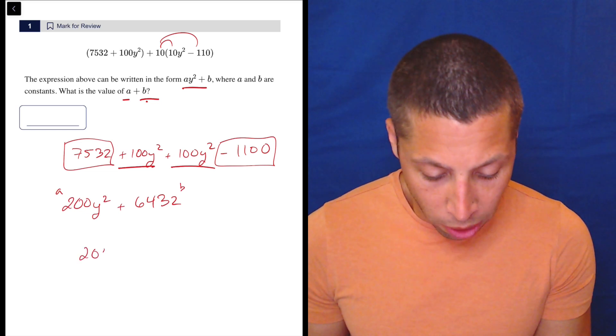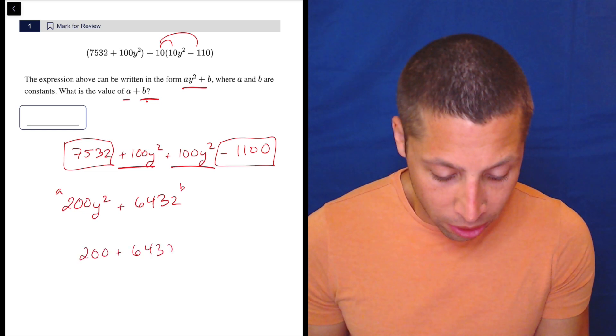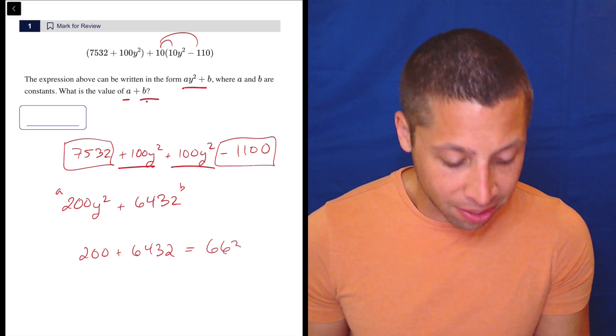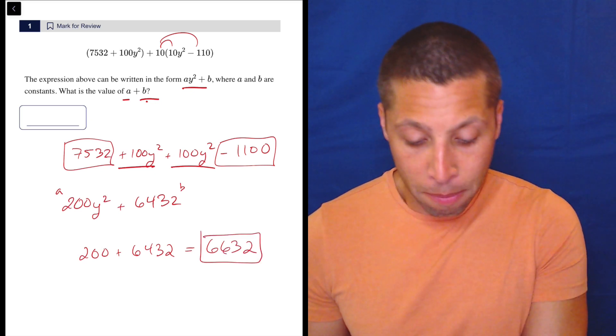They want to know A plus B. So 200 plus 6432 is 6632. That is my answer.